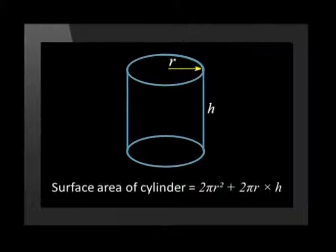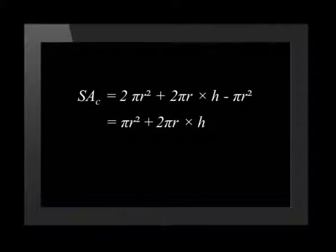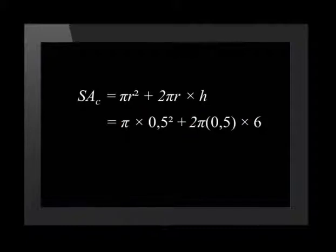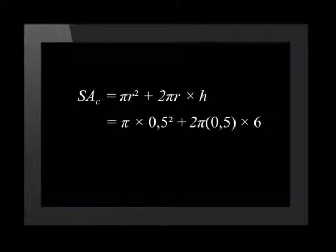The surface area of a cylinder is 2 times the area of the circle plus the circumference of the base times the height of the cylinder. But we need to subtract one of the circle bases from the area of the cylinder, as previously explained. So to calculate the surface area, we use pi r squared plus 2 pi r times height. Substituting in the given dimensions, we get the surface area equal to pi times 0.5 squared plus 2 times pi times 0.5 times 6. Using the pi key on your calculator and rounding off to two decimal places, this works out to be 19.63 meters squared.